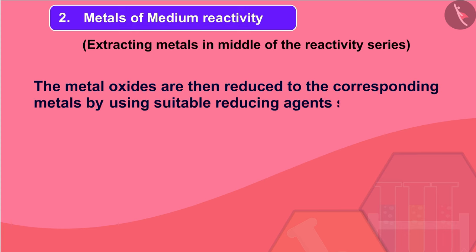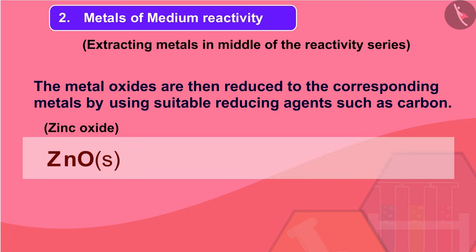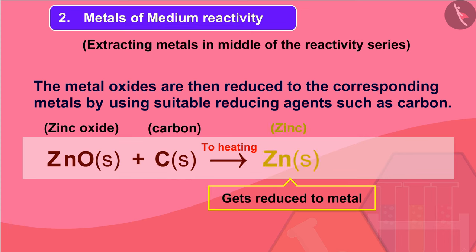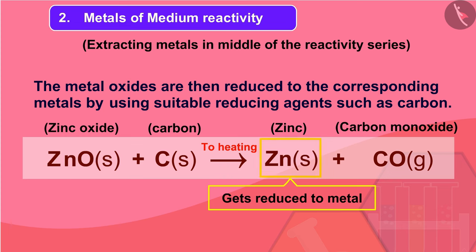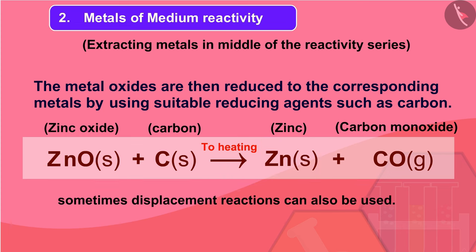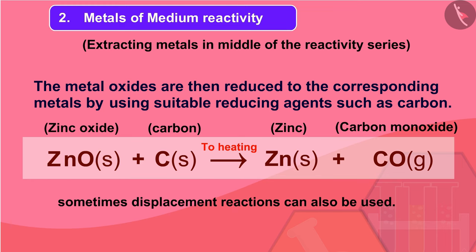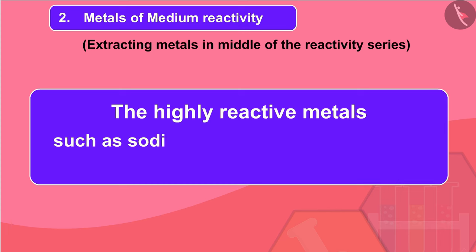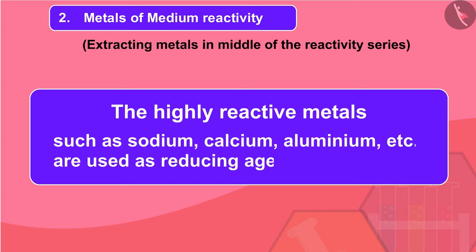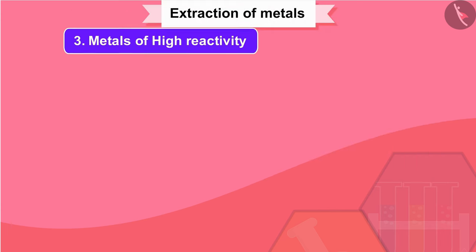The metal oxides are then reduced to the corresponding metals by using suitable reducing agents such as carbon. For example, when zinc oxide is heated with carbon, it is reduced to metallic zinc. Besides using carbon or coke to reduce metal oxides, sometimes displacement reactions can also be used, where highly reactive metals such as sodium, calcium, and aluminium are used as reducing agents.